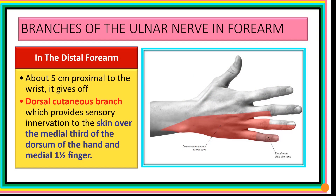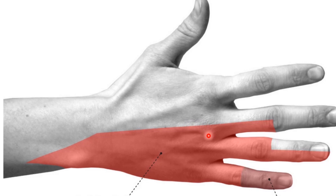The dorsal cutaneous branch is given off in the distal forearm, approximately 5 cm from the wrist. This branch runs to the posterior compartment, providing sensory innervation to the skin over the medial third of the dorsum of the hand, and also the dorsum of the medial one and a half fingers — the little finger and half of the ring finger.